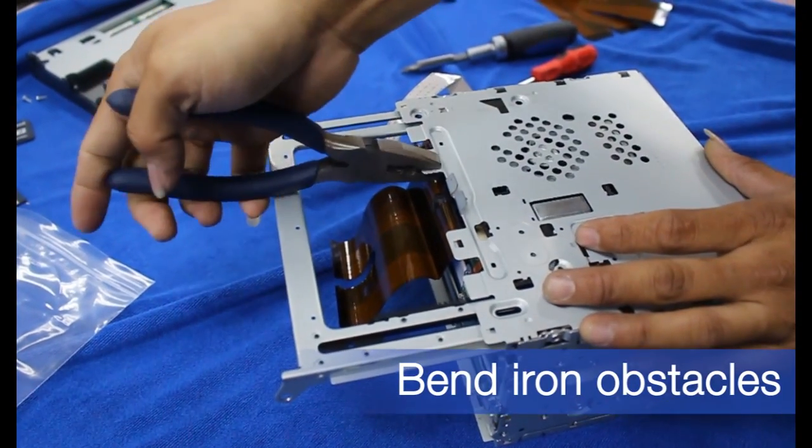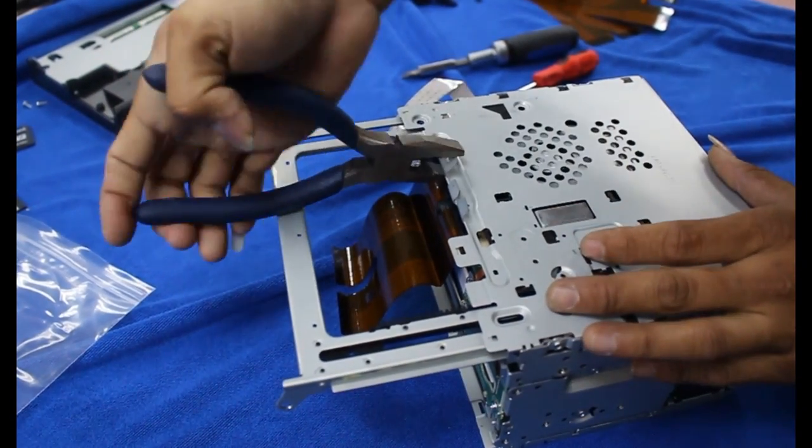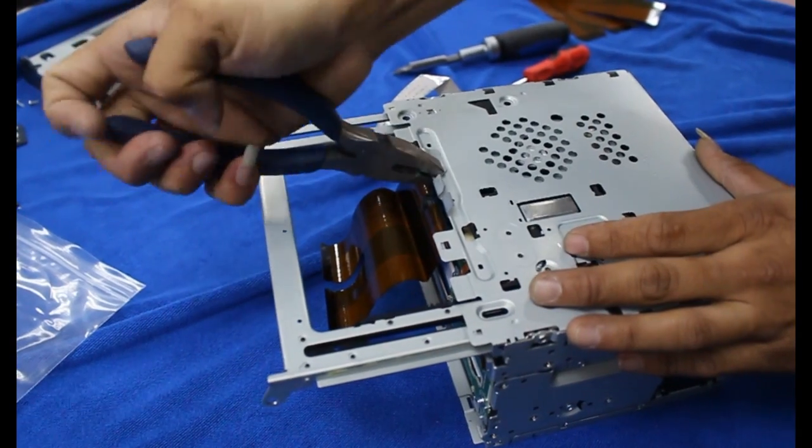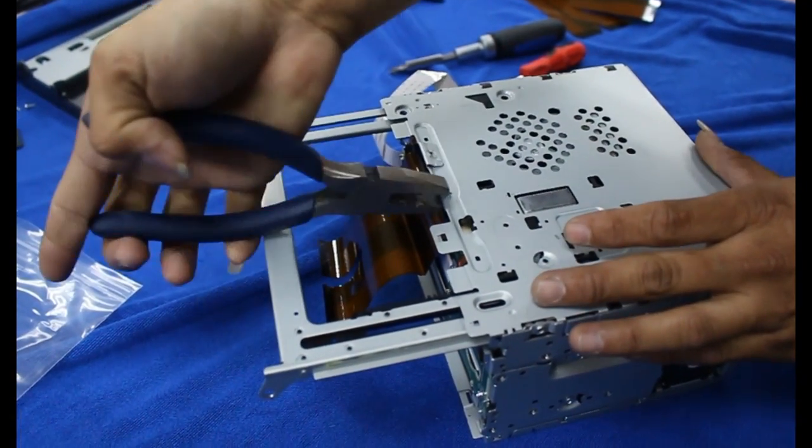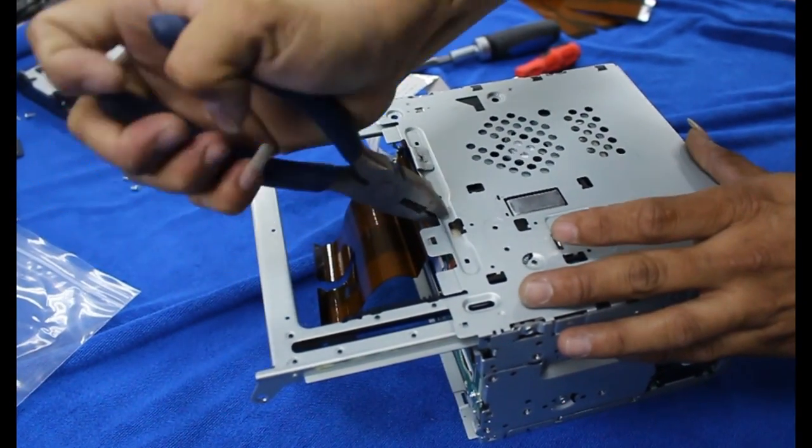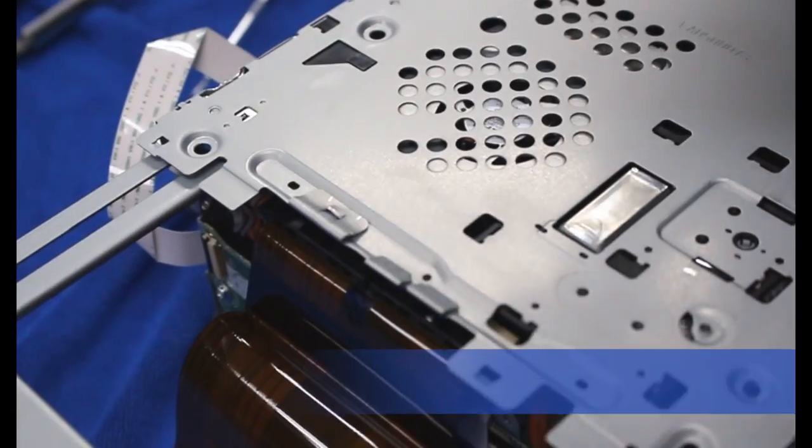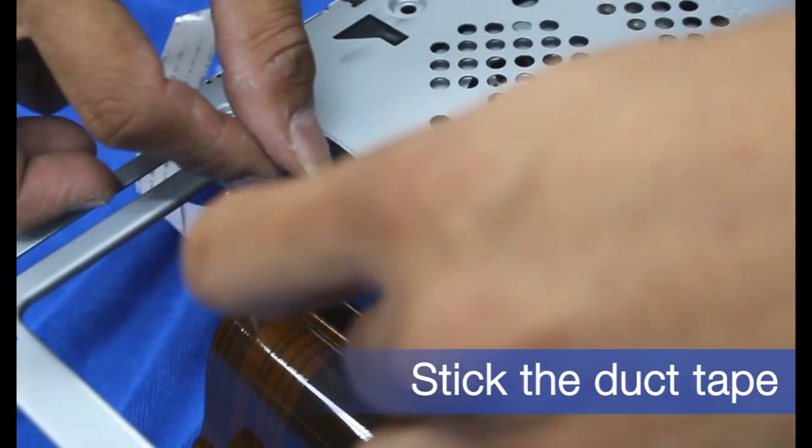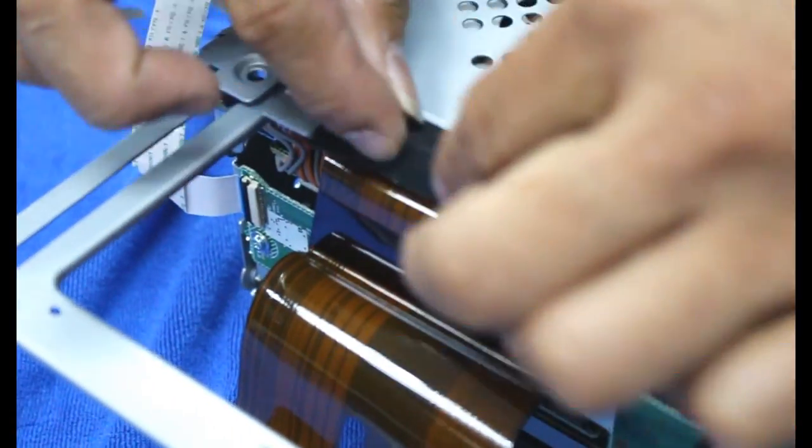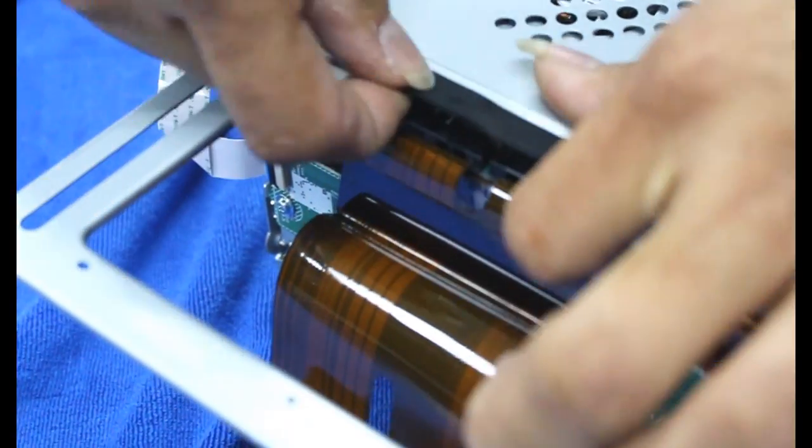Carefully and slowly bend the iron obstacles as the video strips will pass by here. After bending the obstacle, use duct tape to cover the bent obstacles to ensure the safety of your video strips.